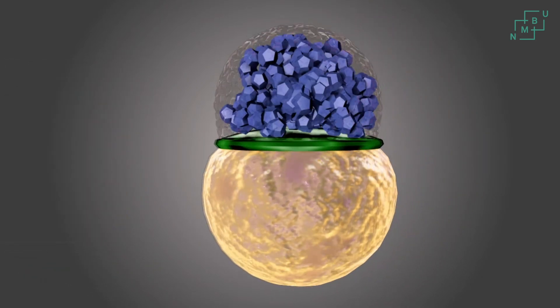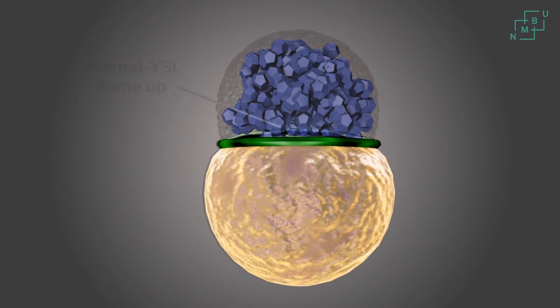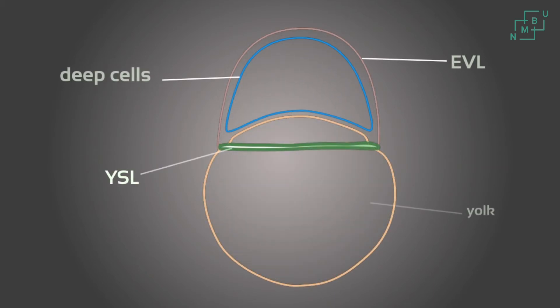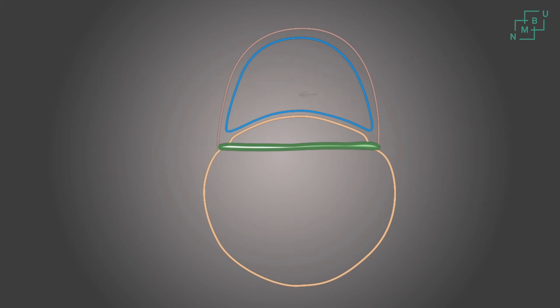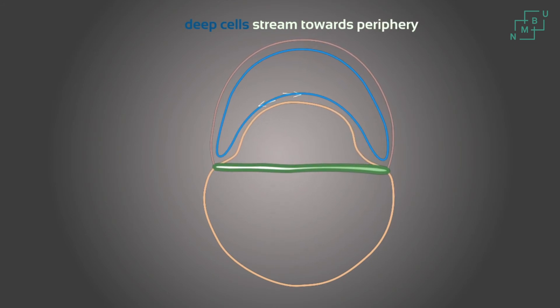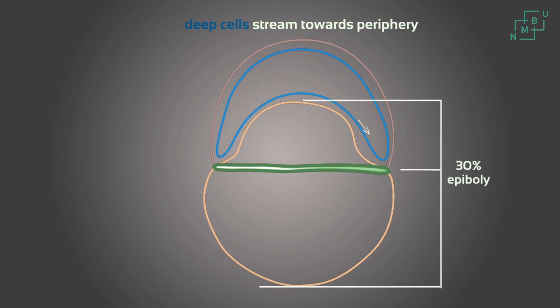At the dome stage, the internal yolk syncytial layer begins to dome up, which is the sign that epiboly has started. Epiboly is the process by which the yolk syncytial layer moves towards the vegetal pole and takes with it the blastoderm, so that the blastoderm spreads over the yolk cell. The development of the embryo is described by its percent epiboly.